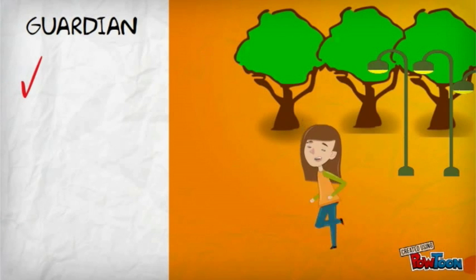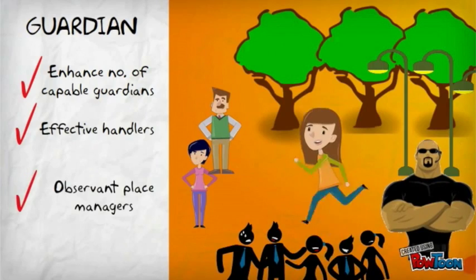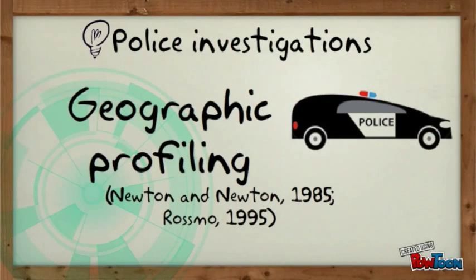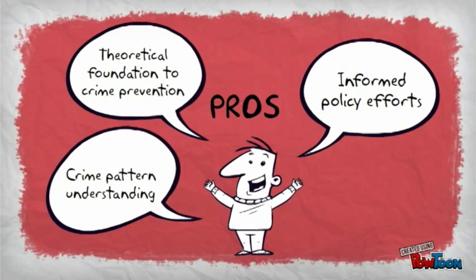Strategies can be done to enhance the number of capable guardians, be it the common citizens, handlers or place managers. The theory also helps in police geographic profiling, focus investigative activities and geographically prioritised patrolling efforts. RAT is a firm theoretical foundation for crime prevention methods that helps us to understand crime patterns to make informed decisions for crime prevention and intervention.